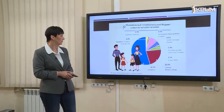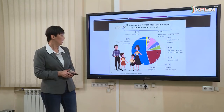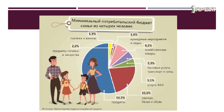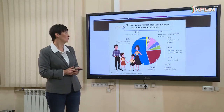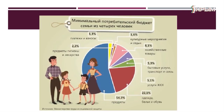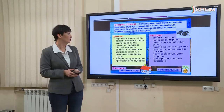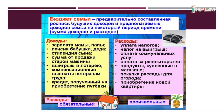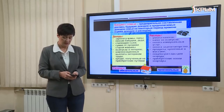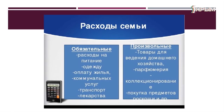На что тратит деньги среднестатистическая российская семья по данным 2019 года (источник — Министерство труда и социальной защиты)? Продукты — более 54%, далее одежда, бельё и обувь, хозяйственные товары, бытовые услуги, жилищно-коммунальные услуги и так далее. Хотелось бы, чтобы семьи могли больше тратить на культурные мероприятия, отдых и хобби. Расходы бывают постоянными и переменными.